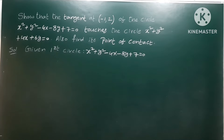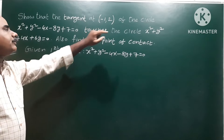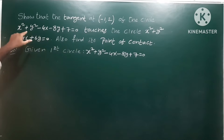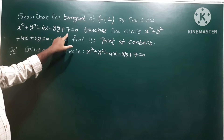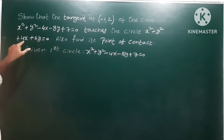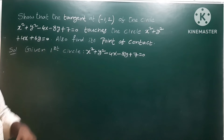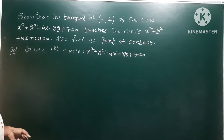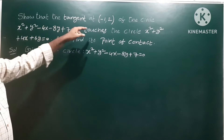The problem: show that the tangent at (-1, 2) of the circle x² + y² - 4x - 8y + 7 = 0 touches the circle x² + y² + 4x + 6y = 0. Also find the point of contact.